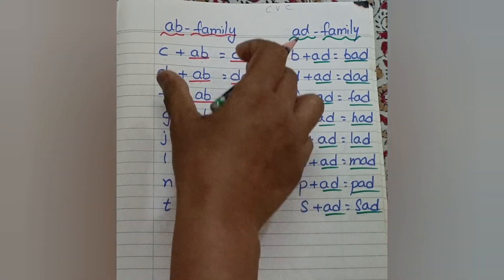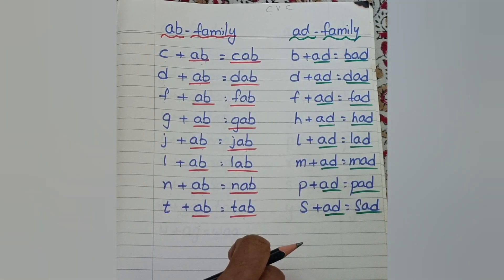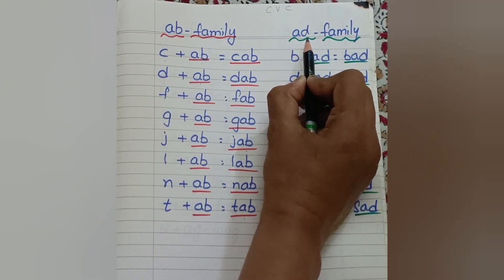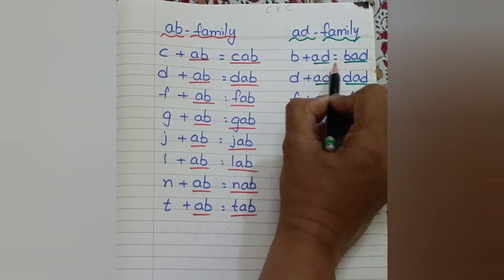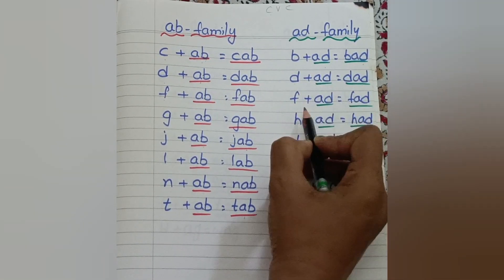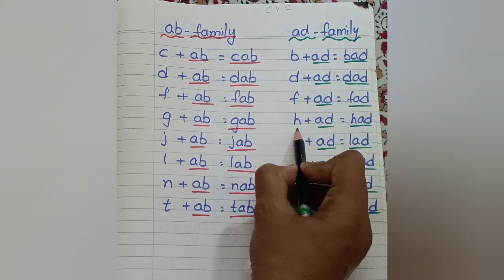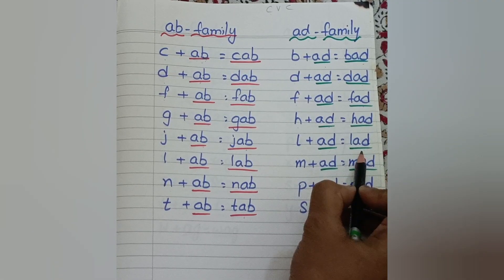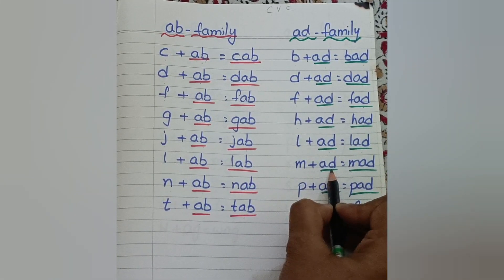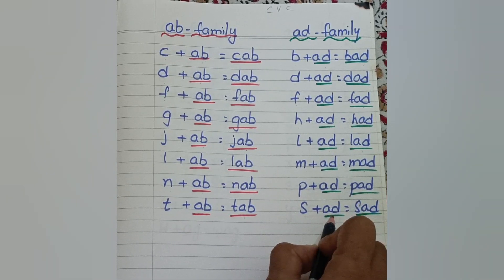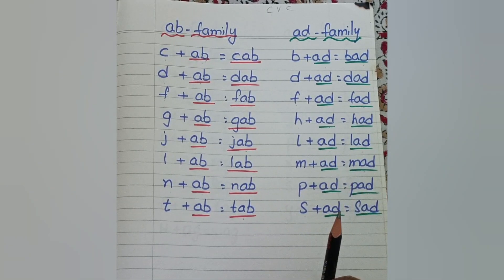So these are the A family words. Then after this, we have Ad family. S, Ad: Sad. B, Ad: Bad. D, Ad: Dad. F, Ad: Fad. H, Ad: Had. L, Ad: Lad. M, Ad: Mad. P, Ad: Pad. S, Ad: Sad.